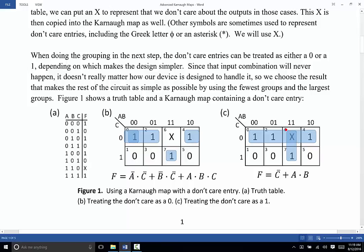Clearly, treating it as a one is going to allow us to have fewer groups and larger groups. Over here, we have to have three groups. Two of them are only two cells. One of them is only one cell. Over here, we need only two groups. And one of them gets to be four cells and the other one gets to be two cells.